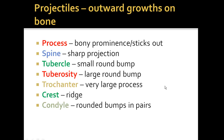The last projection is a condyle. For example, as your femur goes down to help form your knee — where the patella would be — you can have these rounded bumps in pairs. Your tibia has them as well, so there's a medial and a lateral condyle. That's pretty much the process of bone formation, ossification, a close-up look at compact bone, and the different types of formations that give bones their unique shape. I hope that was helpful. Thank you.